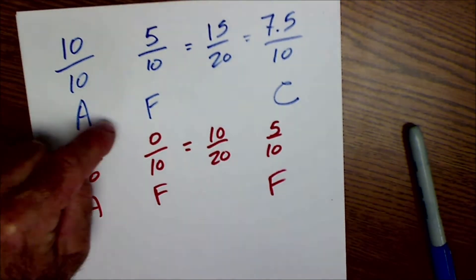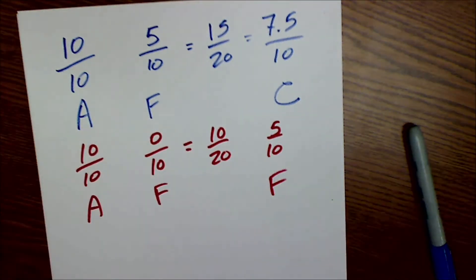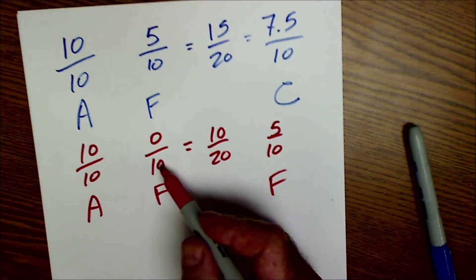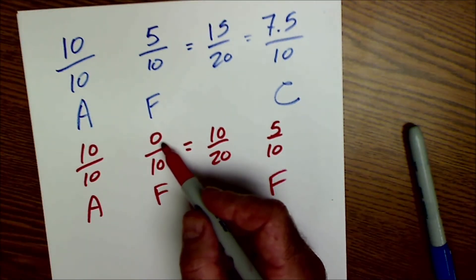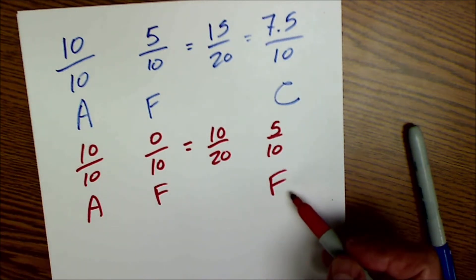So in the first scenario, the A and the F average to a C. In the second scenario, I don't even bother to go in, get a big goose egg in the grade book, and it averages out to an F.